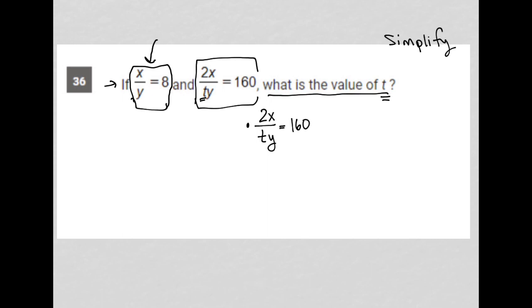So to do that, I'm going to multiply both sides of the equation by t so that my t is canceled on the left-hand side, and I'd be left with 2x over y equals 160t.